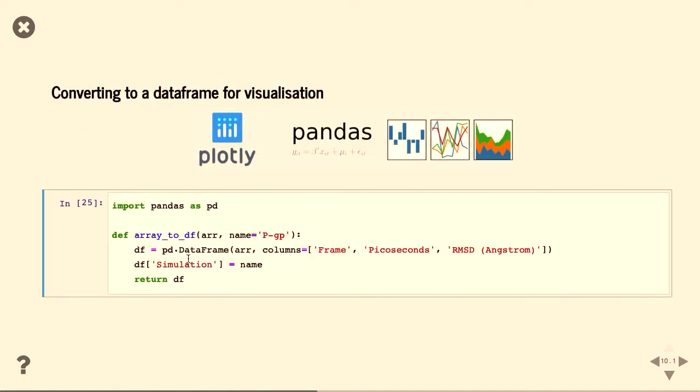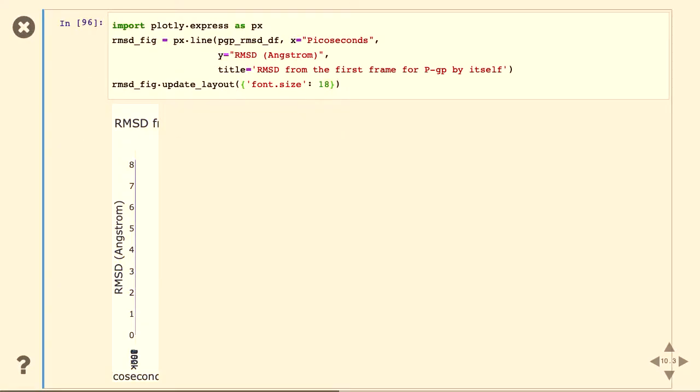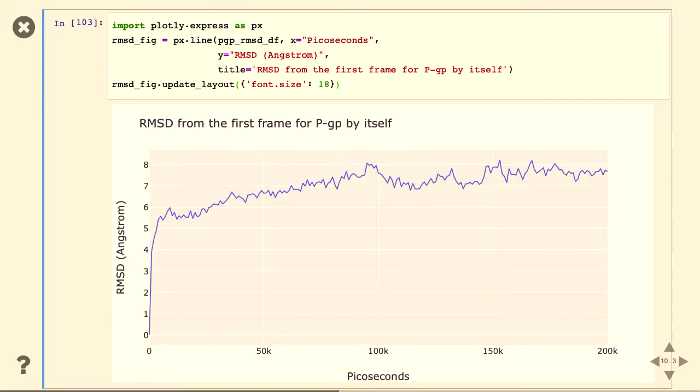And that's what it looks like. Oh, I should probably say I put this in a function, because I'm going to do it three times, and I don't want to rewrite it every time. Right, that's what it looks like. Again, you have the frame. You have the time in picoseconds. And I've also labeled which simulation it's going into, because I'm going to eventually concatenate them.